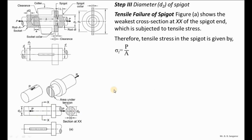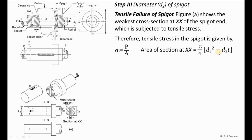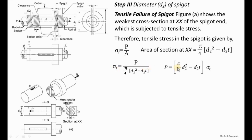The induced tensile stress at section XX is sigma_T = P/A. The net cross-sectional area is A = (π/4)d2² − d2×t, subtracting the slot area for the cotter. Substituting: P = [(π/4)d2² − d2·t] × sigma_T. With P = 50,000, t = 10, and sigma_T = 66.67, this forms a quadratic equation in d2.